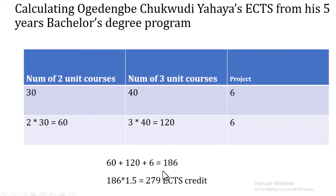Using the rule of thumb, we multiply 186 by 1.5 to get 279 ECTS credits. So if you attend a five-year program in Nigerian universities, especially at federal universities of technology, you are definitely going to be above the 180 ECTS credits required by most Erasmus Mundus programs.